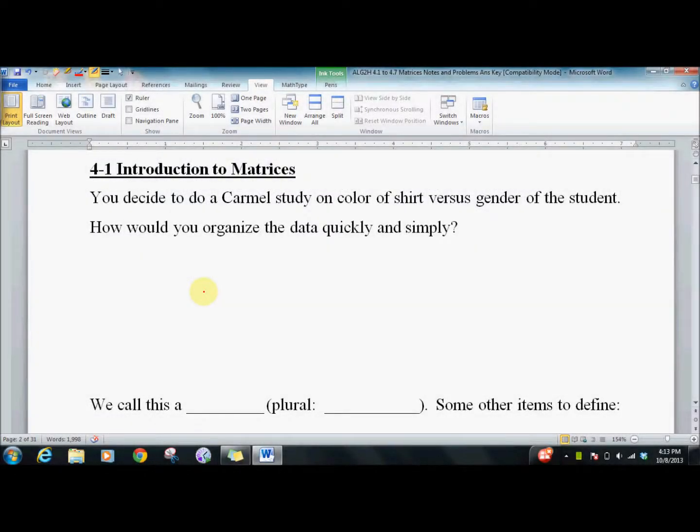Lesson 4.1, Introduction to Matrices. You decide to do a Carmel study on color of shirts versus gender of the students. How would you organize this data quickly and simply? Well, you say the boys have three reds and two blues and four greens, and the girls have one red, let's make it one purple, two blues, one green, and eight purples. So the way you can put this data together...